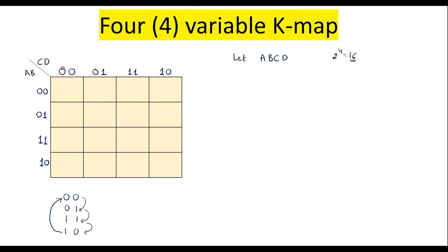In all columns, the first variable corresponds to C and the second to D. If a number is 0, it indicates the complement of the variable; if 1, it indicates the direct variable. For example, 00 means C-bar and D-bar; 01 means C-bar and D; 11 means C and D; 10 means C and D-bar. Similarly for rows: 00 is A-bar B-bar, 01 is A-bar B, 11 is AB, and 10 is A B-bar.